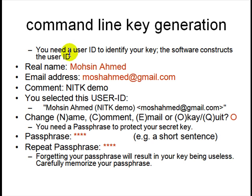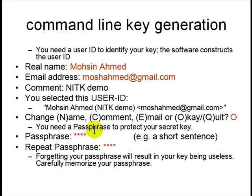To generate a key, you need an ID — you type in a name, type in your email ID, and then put some comments. It shows you what you typed in and asks if you're okay. You then need a passphrase, which is a long password — a short sentence to protect your key pair. GPG is going to save the key pair on your computer, and anyone who has access to your laptop or server can copy the key pair, but it will be locked using the passphrase. So every time GPG needs it, it will ask you to type the passphrase, and without it there is no other way to access the key pair.